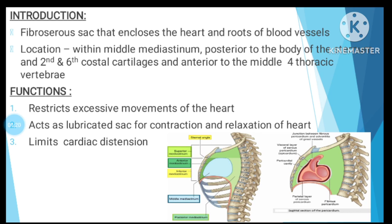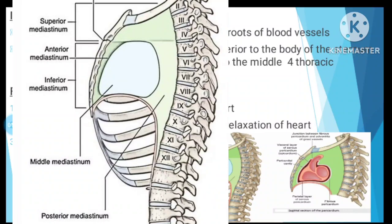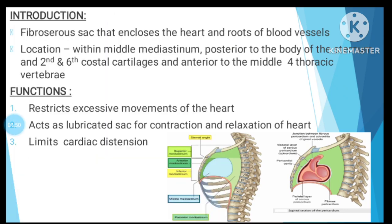Second point is location. The pericardium is located in the middle mediastinum. The mediastinum is in front of the lungs. It lies posterior to the body of the sternum — the chest bone — at the level of the 2nd to 6th costal cartilage.